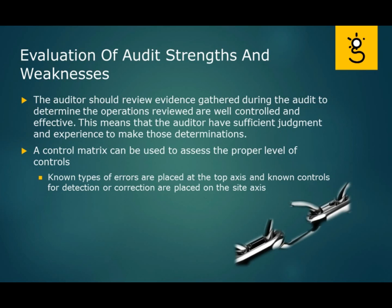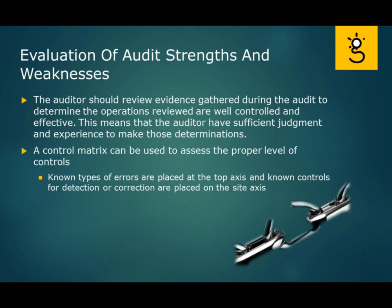As an auditor, you should review the evidence gathered during the audit to determine that the operations reviewed were well-controlled and effective. That also means you should have sufficient judgment and experience to make those types of determinations. One tool you might use is what's called a control matrix, which can help assess the proper level of controls. Think of a chart with two axes — the known types of errors are placed on the top axis, and the known controls for detection or correction are placed on the side axis — allowing you to map errors to controls.